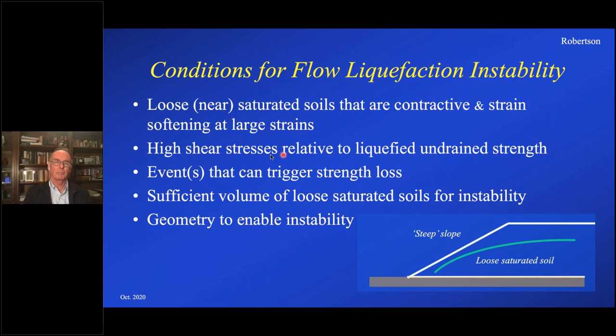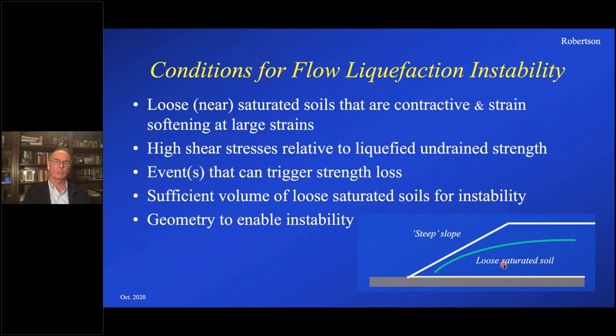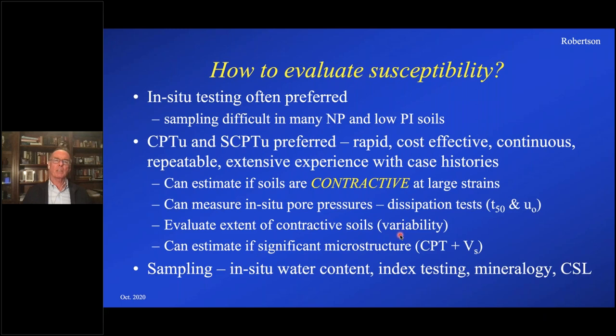Then you have to have relatively high shear stresses — higher than the liquefied undrained strength. Then you have to have some event or series of events that can trigger the strength loss, and then a sufficient volume of this loose material to actually cause instability. For example, a well-constructed compacted earth embankment with loose tailings behind it — a portion of the tailings might be very loose, contracted, and saturated, showing some strength loss, but if the dam is strong and dilative with a high drained strength, instability may not result. And lastly, you have to have a geometry that enables instability, such as a slope.